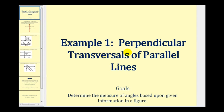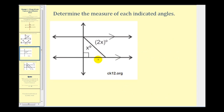Welcome to the first example of using the properties of a perpendicular transversal of parallel lines to determine the measure of angles. Let's take a look at our first figure. Here we have two parallel lines cut by a transversal, and we're given that it forms a right angle with the second parallel line.